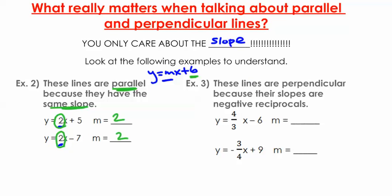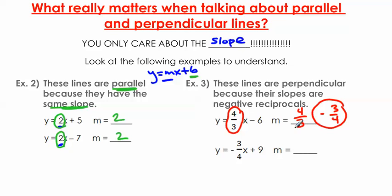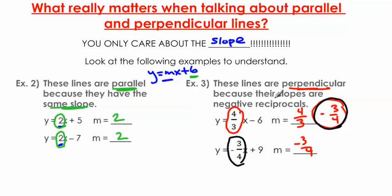For perpendicular lines: these lines are perpendicular because their slopes are negative reciprocals. Starting with y equals 4/3x minus 6, the slope is 4/3. The negative reciprocal of 4/3: flip the fraction to get 3/4, and switch the sign from positive to negative — giving negative 3/4. Looking at y equals negative 3/4x plus 9, this slope of negative 3/4 matches. Since these slopes are negative reciprocals, the lines are perpendicular. Remember: parallel lines have the same slope; perpendicular lines have slopes that are negative reciprocals.